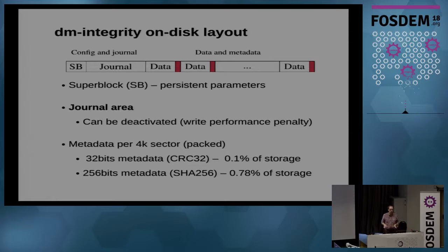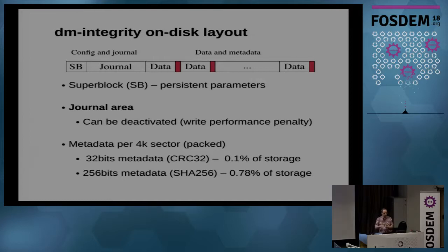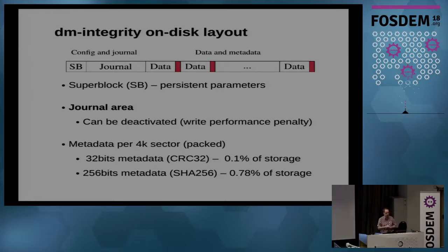DM Integrity works similarly to DM Verity. It formats the device. The device structure has a superblock with persistent parameters, then a data area where data sectors and metadata sectors are interleaved. Metadata sectors contain integrity data for a range of data sectors. They're interleaved on disk so you can easily increase device size online. Then there's a journal area providing journaling of the data — it can be switched off if the upper layer does journaling, but the area remains on disk. Usually it's a small fraction of device size, around 80 megabytes, and everything is configurable.